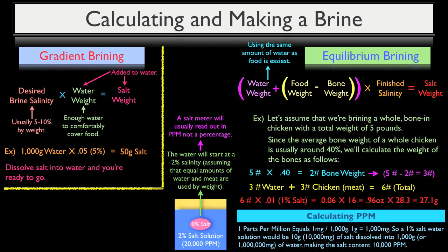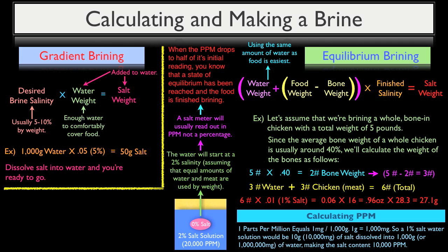when the salt is added to the water, the concentration of the salt solution will actually start at 2% salinity. Now again, since a salt meter will actually read out in parts per million and not a percentage, this is why using the equal amounts of water to food makes this process so much more forgiving. When your parts per million drops to half of its initial reading, you know that a state of equilibrium has been reached and the food is finished brining.